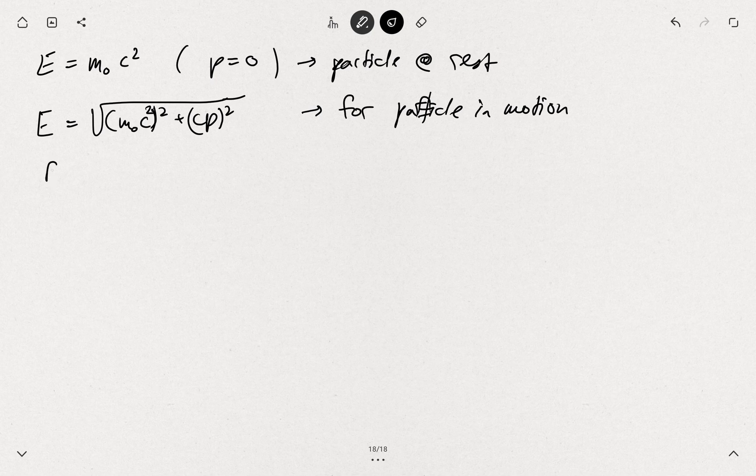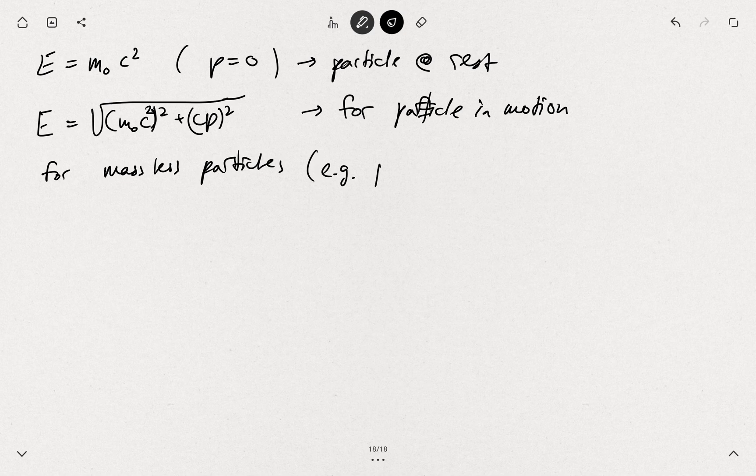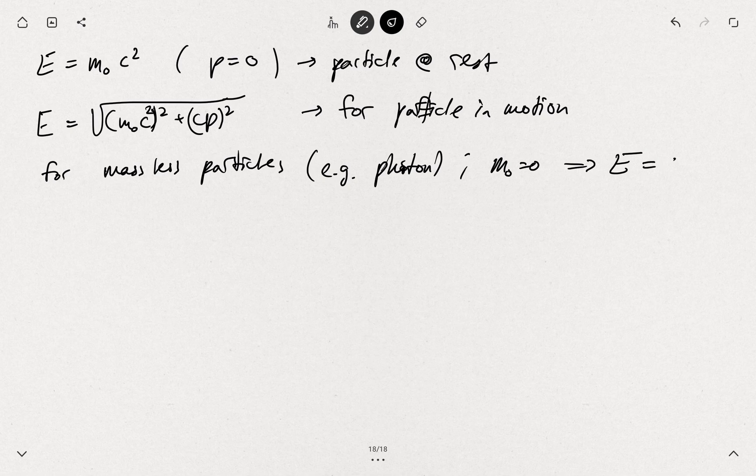For massless particles, like a photon, we have m₀ equals zero, and this means that the energy now is c times p, and that's exactly what we have for the low energy approximation in graphene.